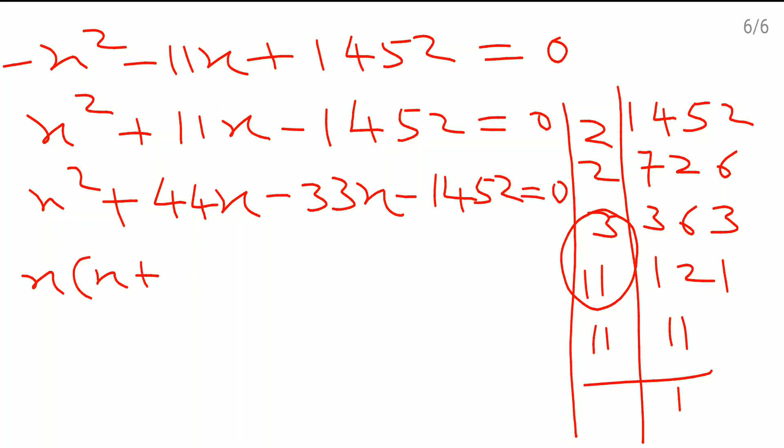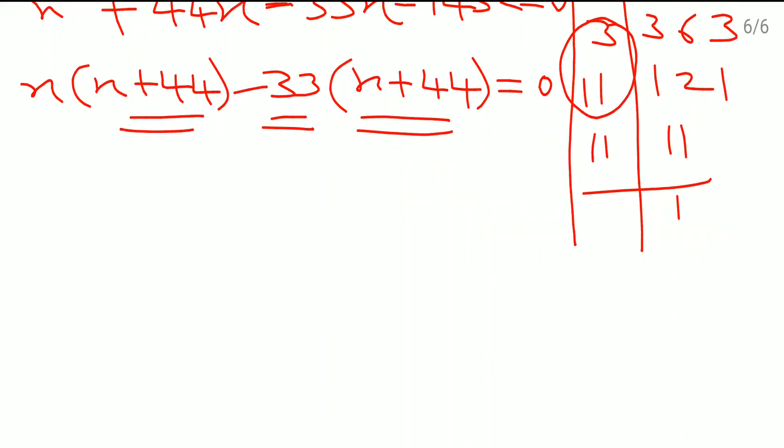Take x common, so x plus 44 here. Minus 33 common, x plus 44 which is equal to 0. This negative sign is here, 33 you take common, and same bracket you are going to write down at this place. Now x minus 33 in one bracket and x plus 44 in another bracket which is equal to 0.